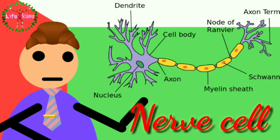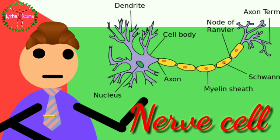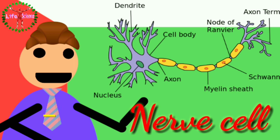The dendrites receive signals from excited nerves or muscle and then transmit the signal through the cell body or soma to the axon. The axon then transmits the signal to the next nerve cells or tissues for excitation.